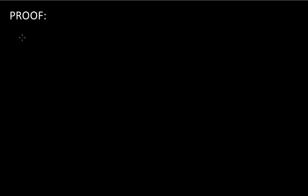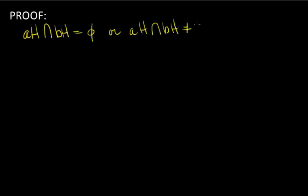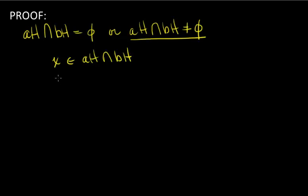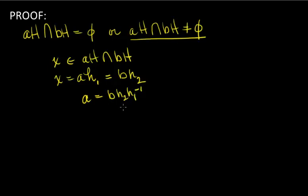Given two cosets of H, we know that AH intersect BH is either empty or not empty. Let's assume it is not empty — suppose there is an X in AH intersect BH. X is in both of them, which means X equals A times some element H1 of H, and it's also equal to B times some other element H2 of H.